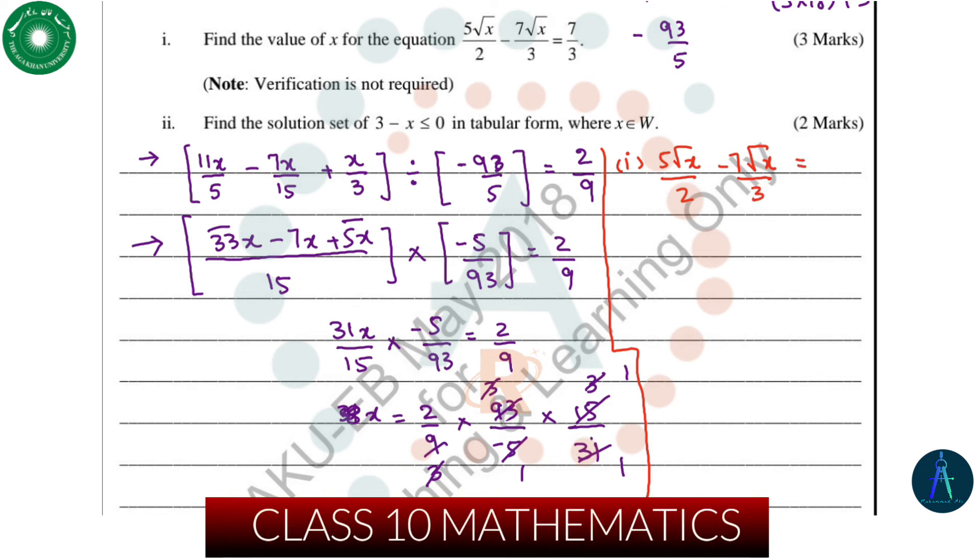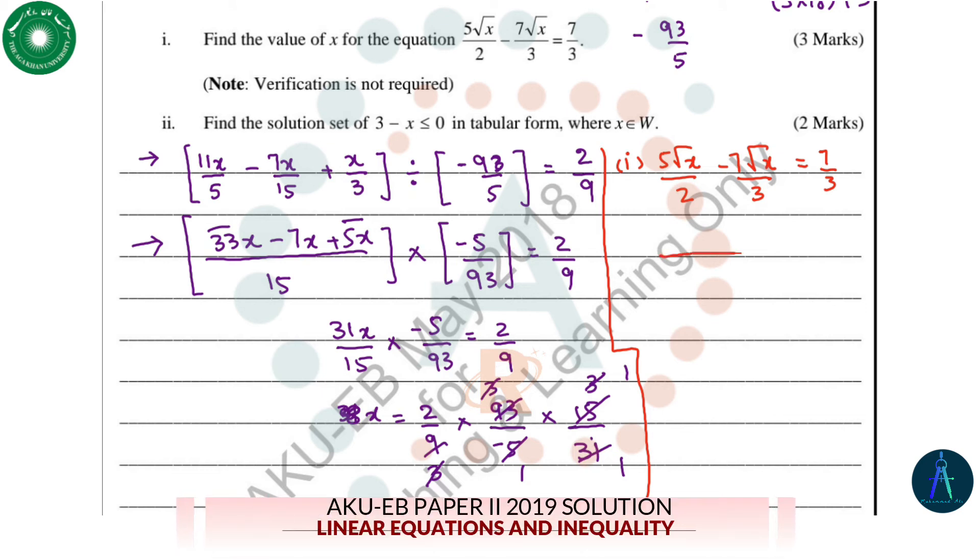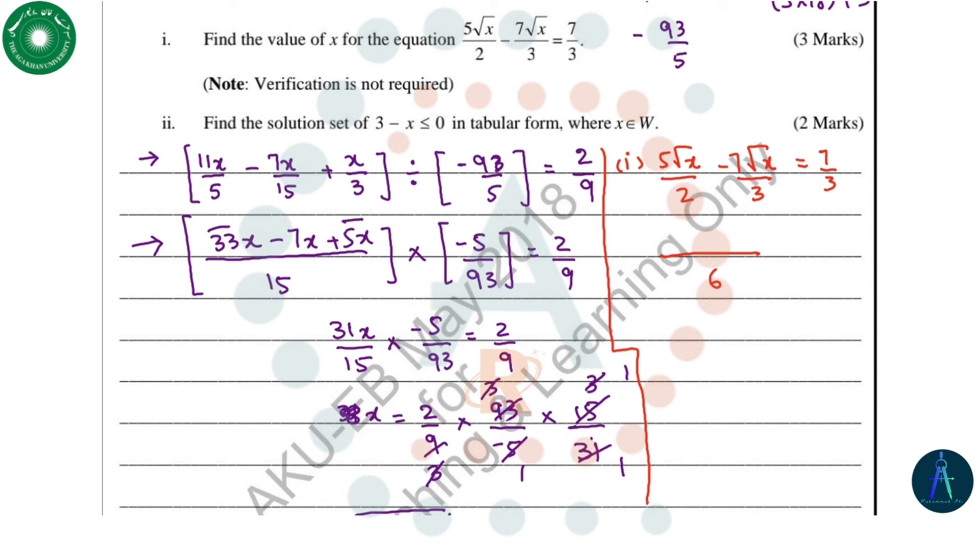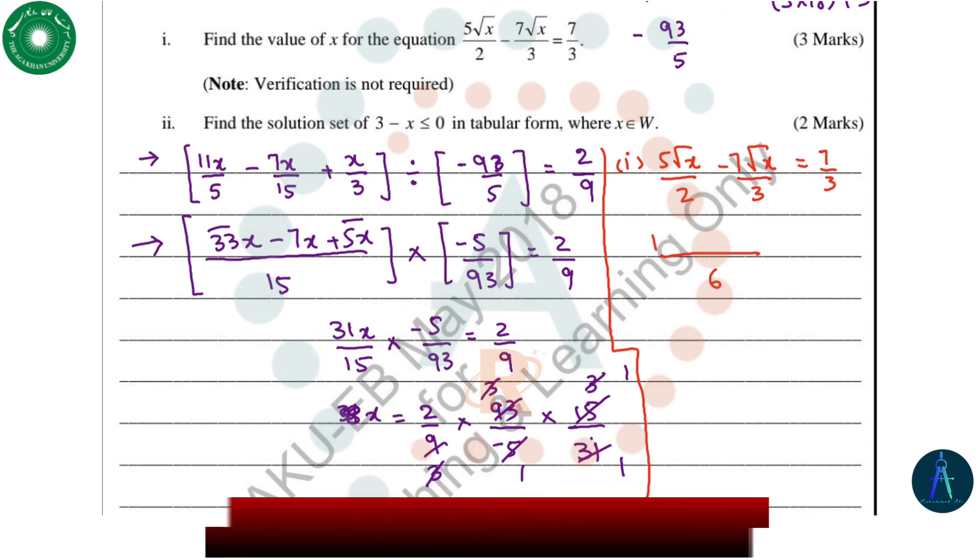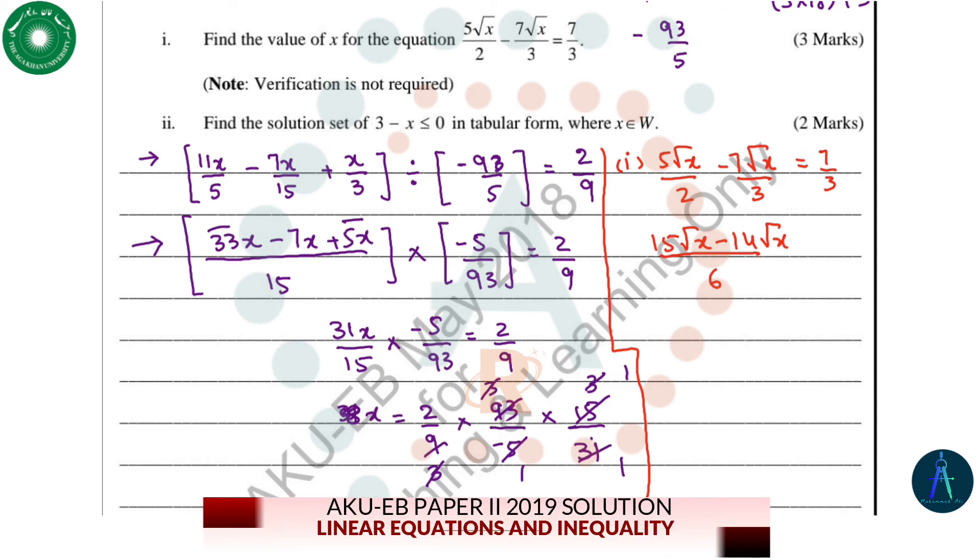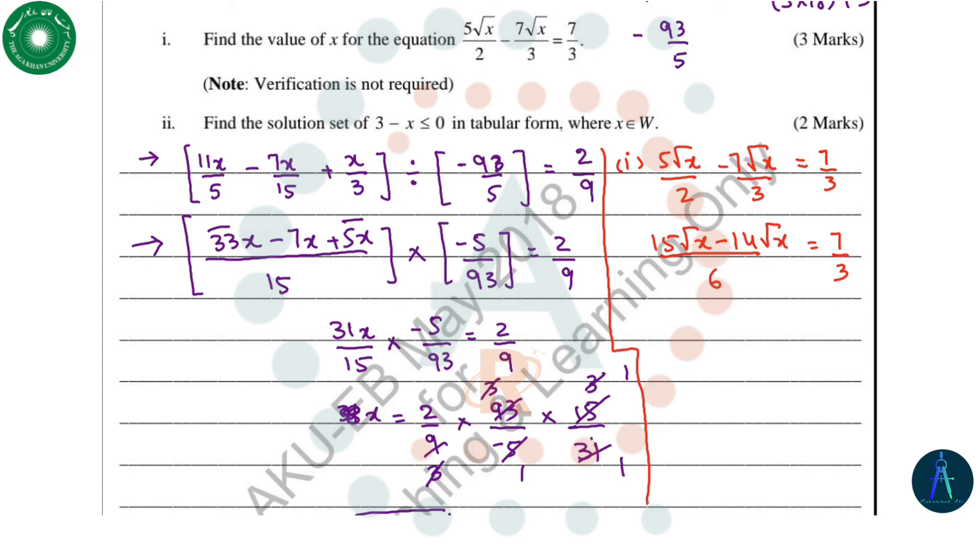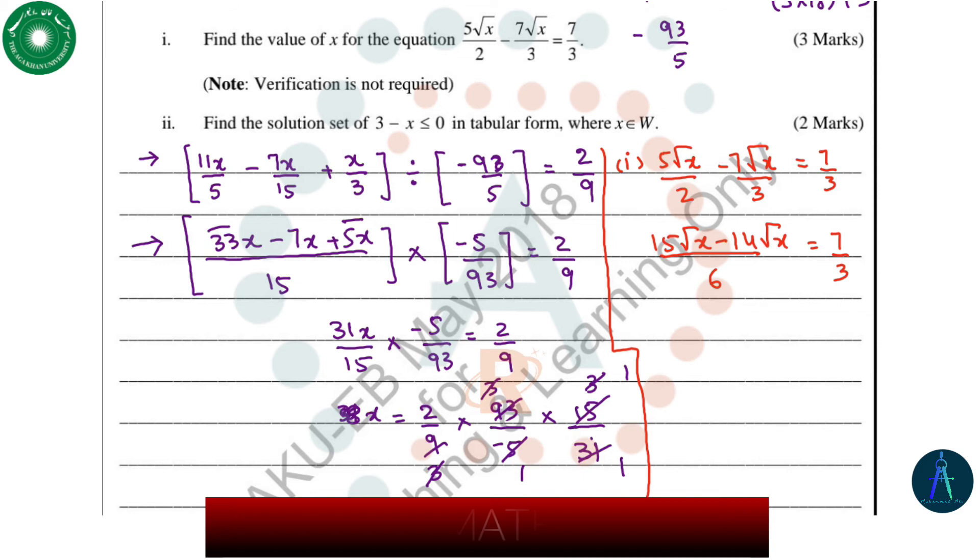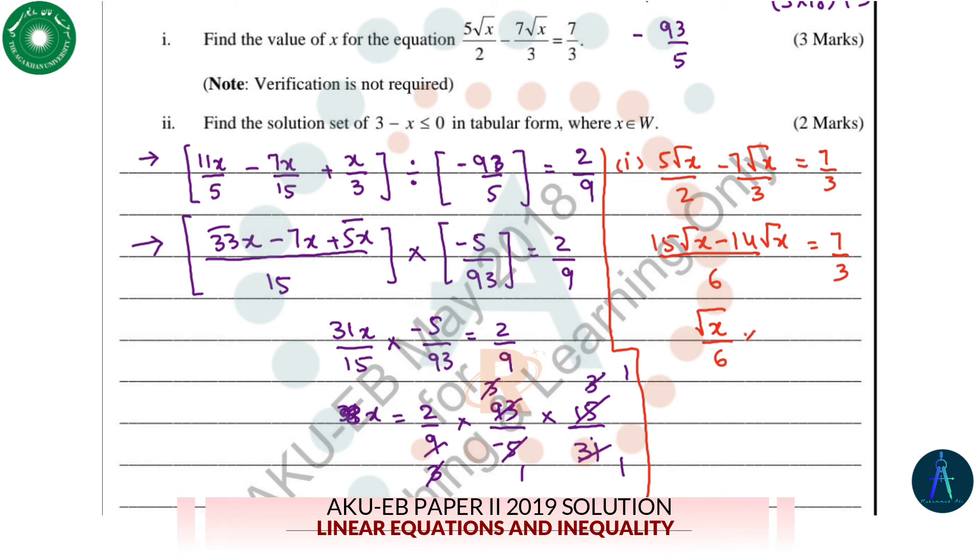Then on the left-hand side we form the LCM, so LCM will be 6. 6 divided by 2 is 3, and 3 times 5 is 15 root x minus 14 root x equals 7 over 3. After taking LCM, we converted the fractions into a single fraction. 15 root x minus 14 root x equals 1 root x divided by 6, equals 7 over 3.